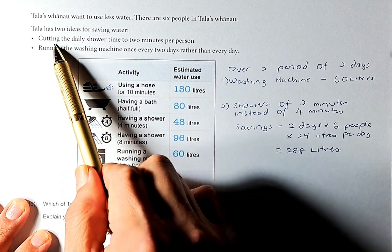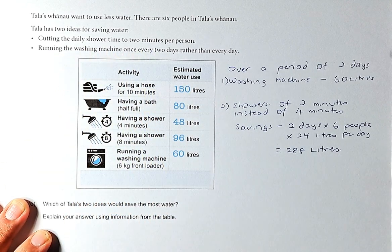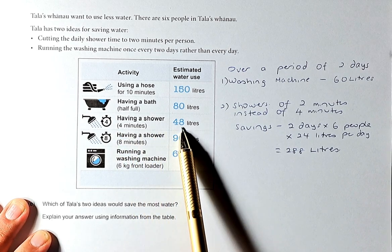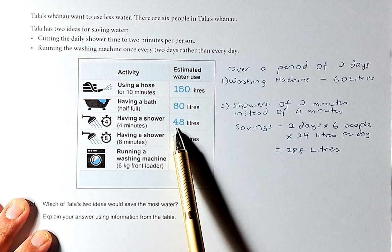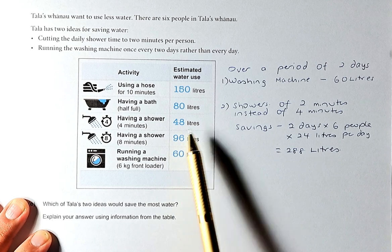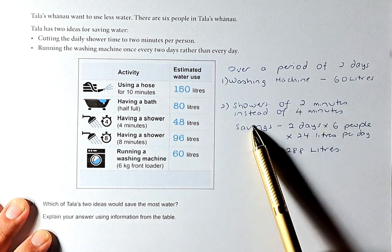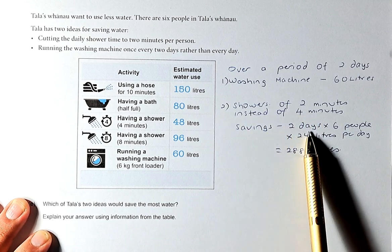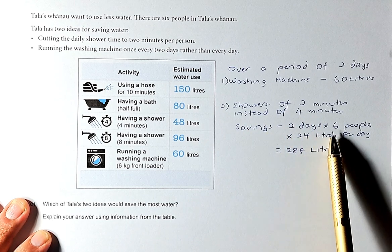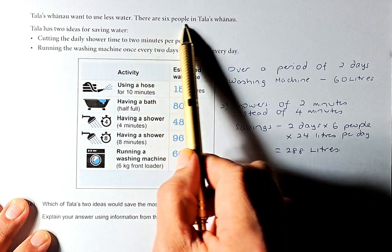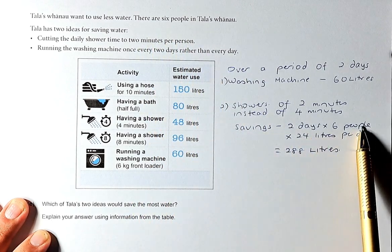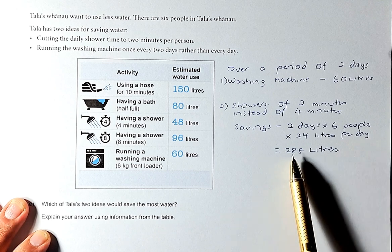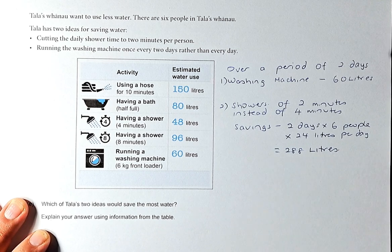Now we're going to calculate cutting the shower time to two minutes per person. Having a shower for four minutes is 48 litres, so two minutes, the amount of litres will be half of it, which will be 24. That's how we're going to calculate. Saving for two minutes instead of four minutes: savings will be 2 days times 6 people times 24 litres, and that comes up to 288 litres.